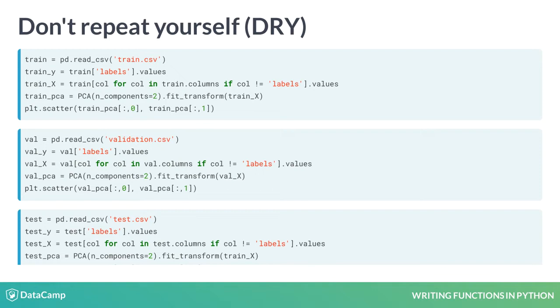However, this kind of repeated code can lead to real problems. In this code snippet, I load my train, validation, and test data, and plot the first two principal components of each dataset.